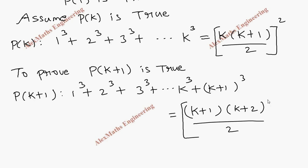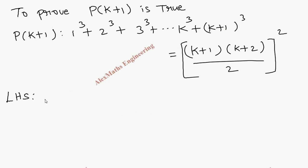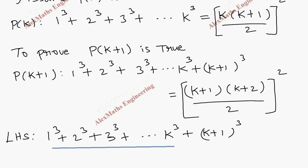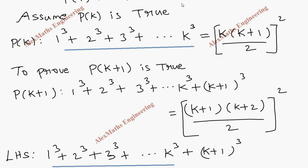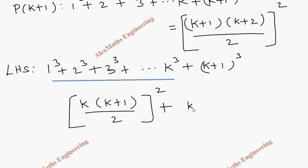Coming to the proof, we take the LHS: 1 cube plus 2 cube plus 3 cube plus dot dot dot plus K cube plus (K plus 1) whole cube. Up to K cube, we already have the expression, so we can substitute K times (K plus 1) divided by 2, whole square for that part. This gives us K times (K plus 1) divided by 2, whole square, plus (K plus 1) whole cube.